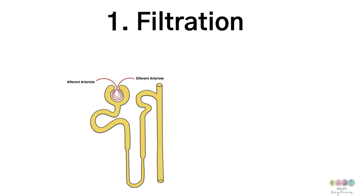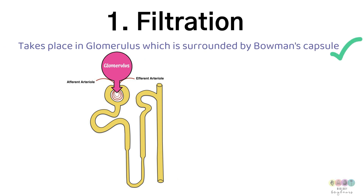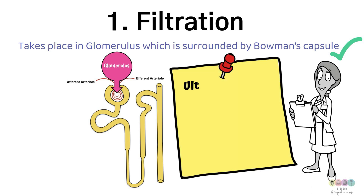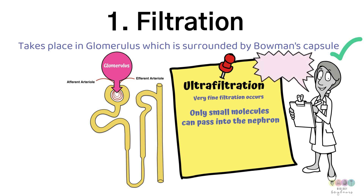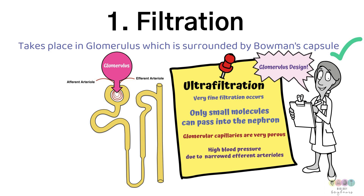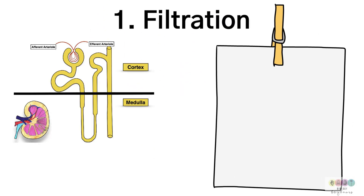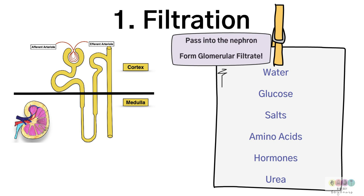Stage one in urine formation is filtration, which takes place in the glomerulus surrounded by Bowman's capsule. It's classed as ultrafiltration — very fine filtration. Only very small molecules, small enough to fit through the fenestrations or pores in the glomerulus, pass into the nephron. The glomerular capillaries are very porous, and high blood pressure due to the narrowed efferent arteriole facilitates this process. Filtration takes place in the cortex of the kidney. Substances filtered include water, glucose, salts, amino acids, hormones, and urea, which together form glomerular filtrate.